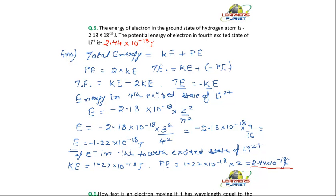Just checking the calculation: 2.18 × 9 divided by 16 gives 1.22 × 10⁻¹⁸, and multiplied by 2 we get 2.45 × 10⁻¹⁸. So the final answer is 2.45 × 10⁻¹⁸ joules. Thank you.